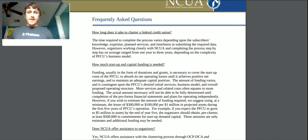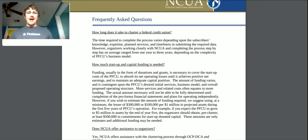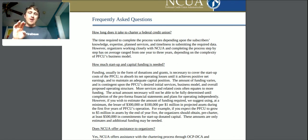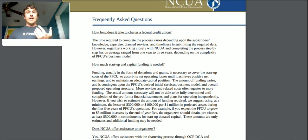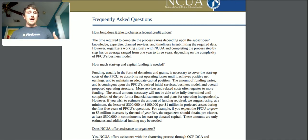However, if you want to estimate the amount of funding required, they suggest using at a minimum the lesser of three hundred thousand dollars, or a hundred thousand dollars per million in projected assets during the first five years of operations. So if you want ten million in projected assets, you should have at least three hundred thousand dollars available to get through that hump phase — covering staff like tellers and loan officers until you have enough incoming funds to pay them and start making a profit.